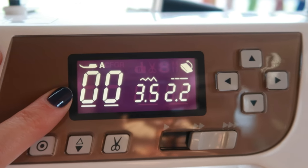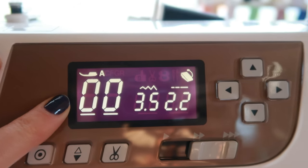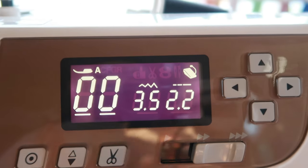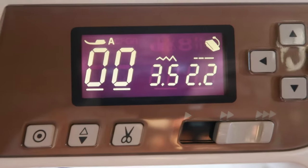On my display screen I see that it is on a zero zero which is my straight stitch, and my stitch length and width are already preset by my sewing machine so I'm not going to mess with them.